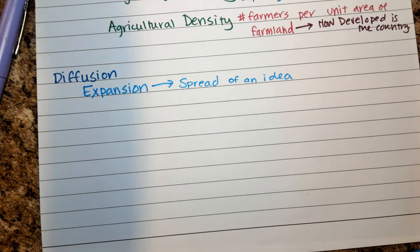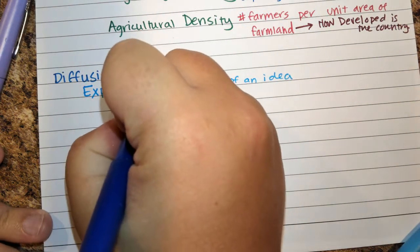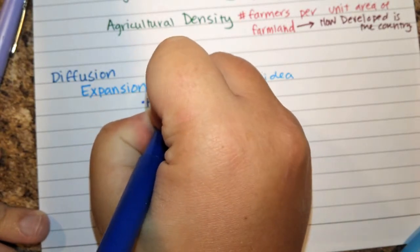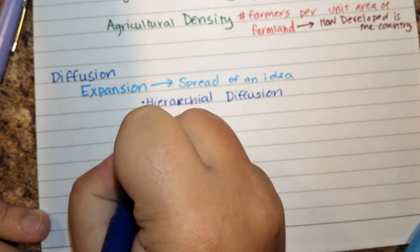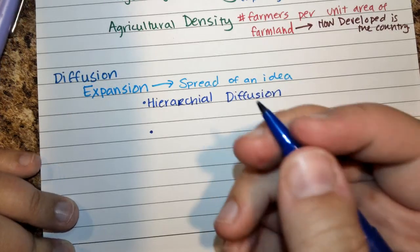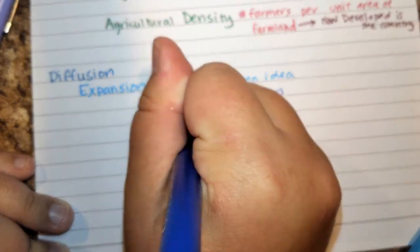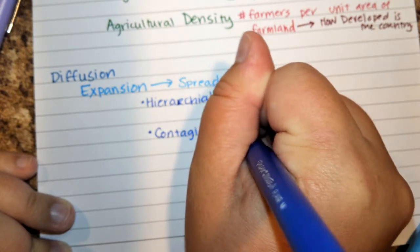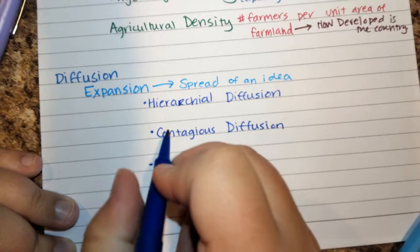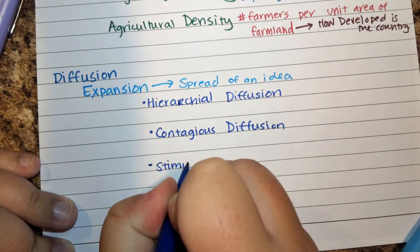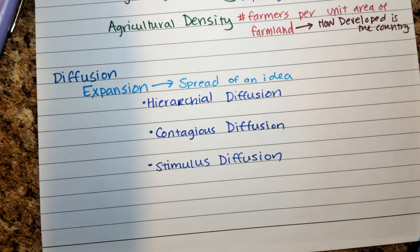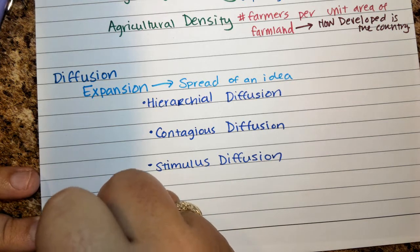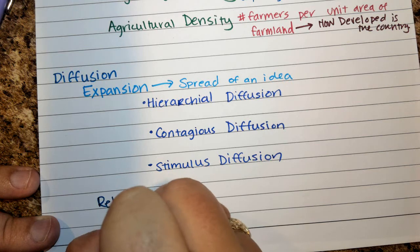Within expansion diffusion, we have hierarchical diffusion, contagious diffusion, and stimulus diffusion. The other main type is relocation diffusion — that's when people move from one area to another and spread ideas through that movement.